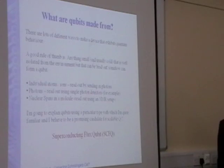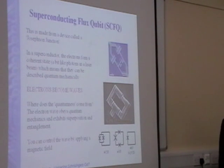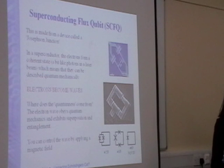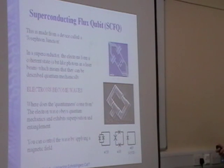I'm going to talk about one particular type, which I think is a promising candidate for quantum computing. It's also the one that I work with in my research, so I'm the most familiar with. What is a superconducting flux qubit? It's made from a device which is called a Josephson junction.